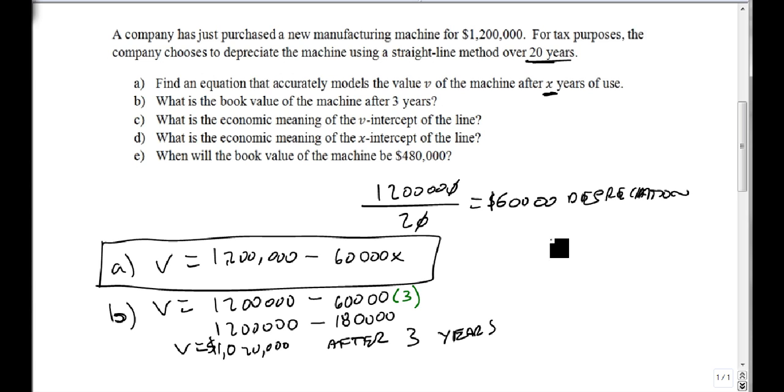Part C is asking about the V-intercept. If we graph this with a basic graph, this is our V-intercept on the value line. The economic meaning is that when I'm right here, it means I just bought it and it's worth the maximum amount. When it crosses the x-axis, that's when it has minimum worth, worth nothing to the company anymore, and it's time to replace it.